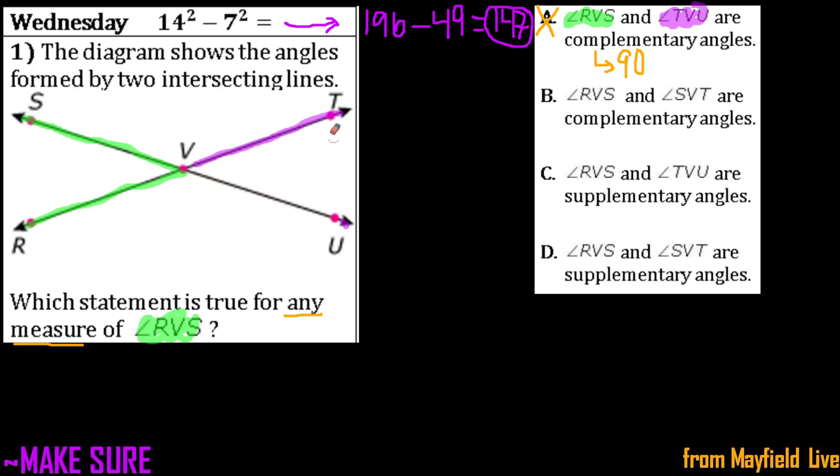So then let's see our other angles in here. Let's say for angle RVS, which is in green, and it says SVT. So let's say SVT. It's saying those two angles are complementary. That is definitely not true because we know that those add up to 180. Again, notice the straight line that they make for ourselves.